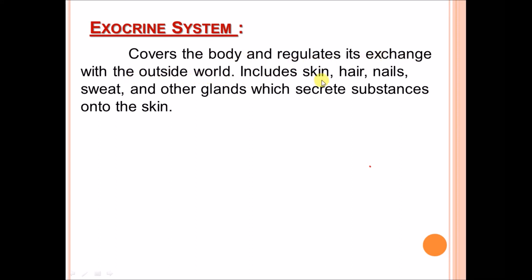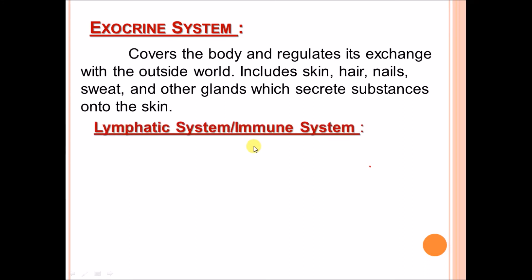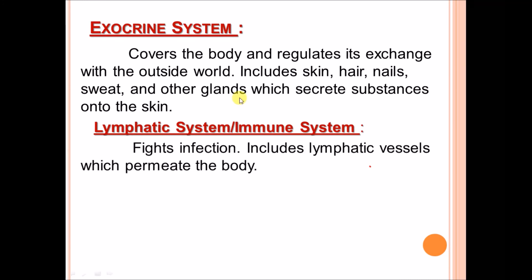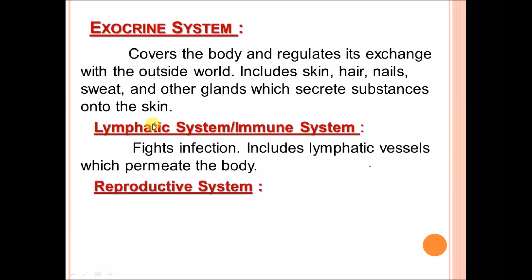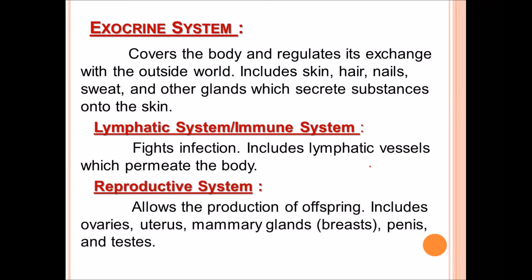The exocrine system includes skin, hair, nails, sweat glands, and other glands that secrete substances onto the skin. The lymphatic or immune system fights infection and includes lymphatic vessels that permeate the body.